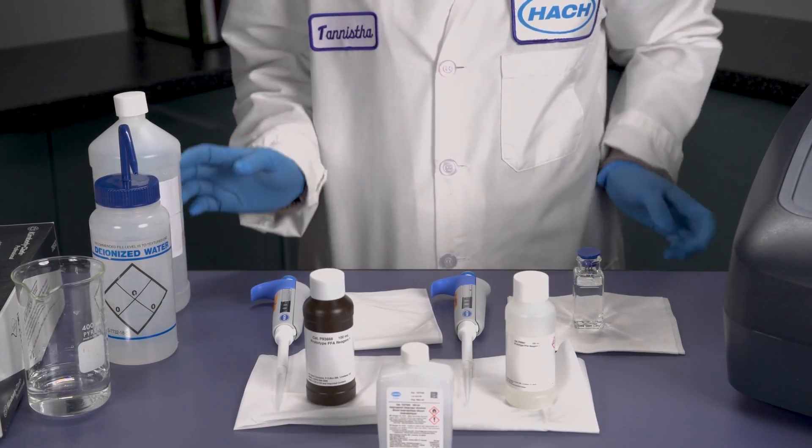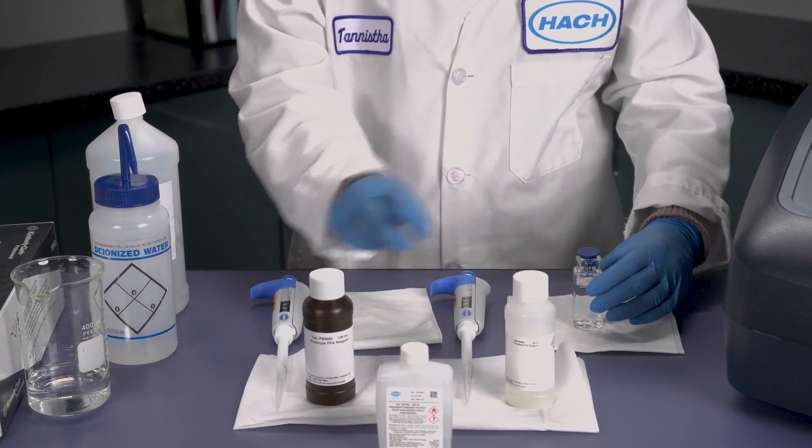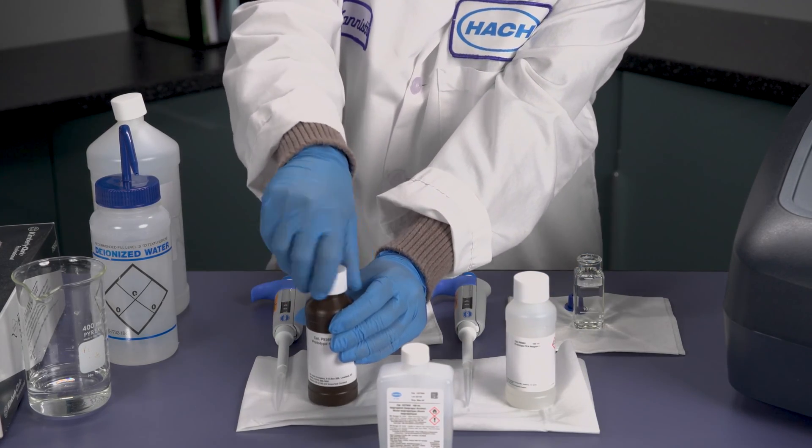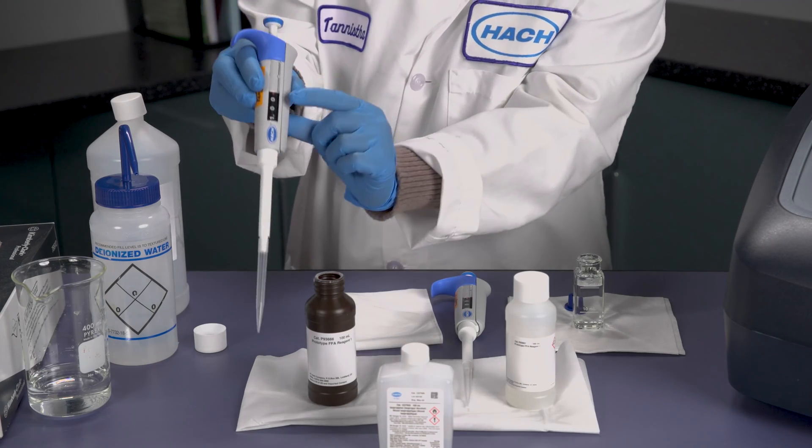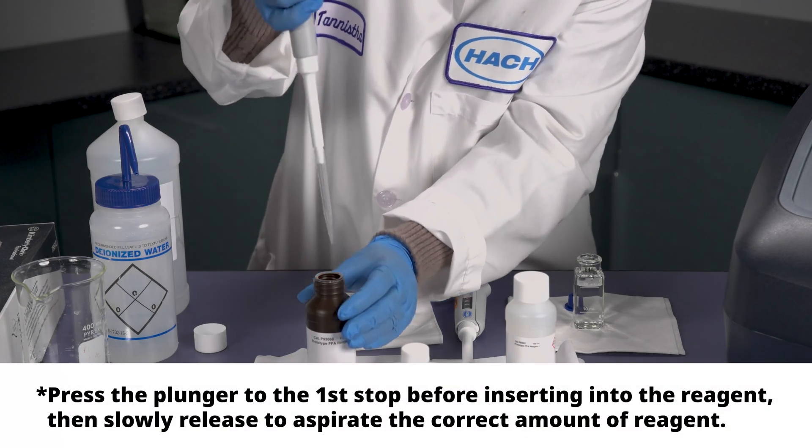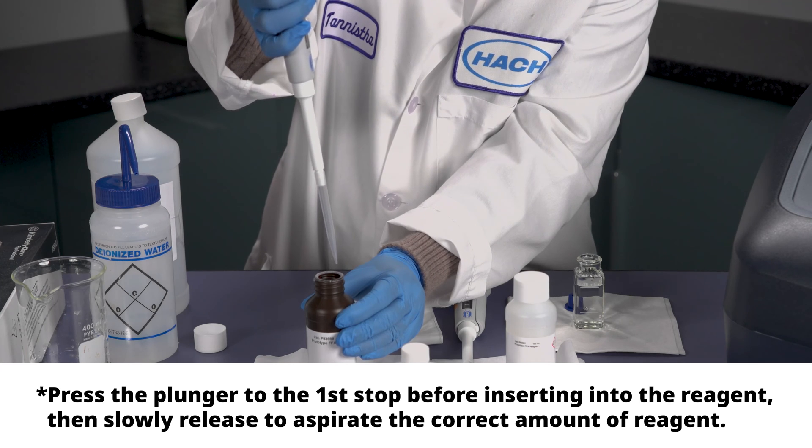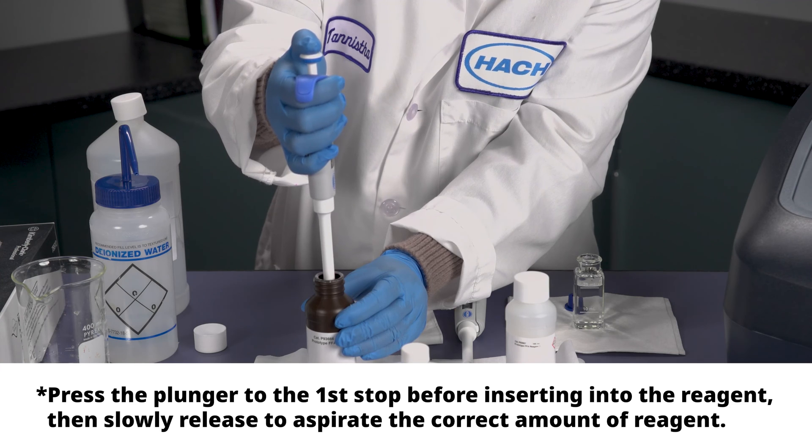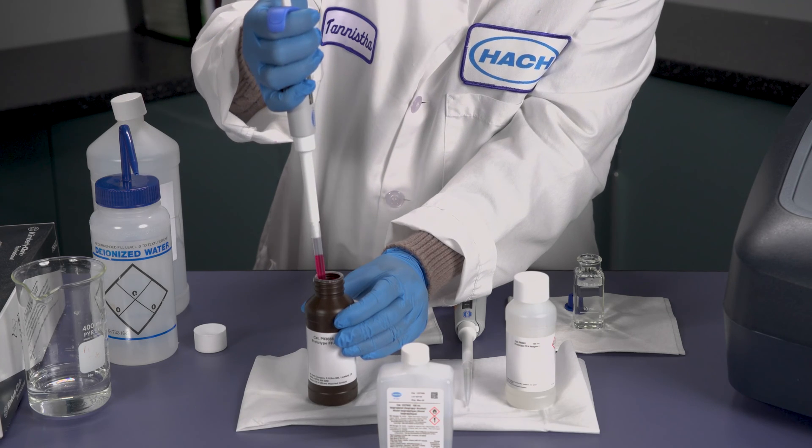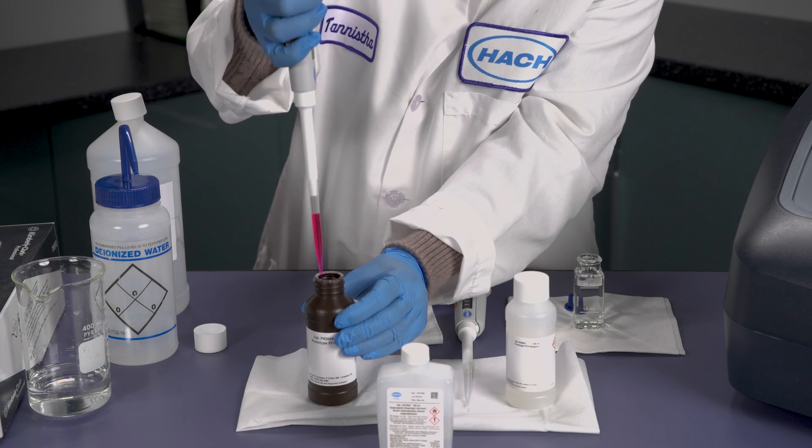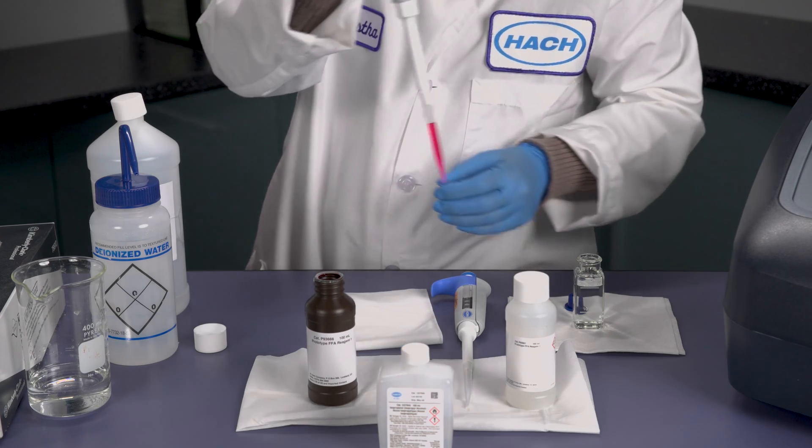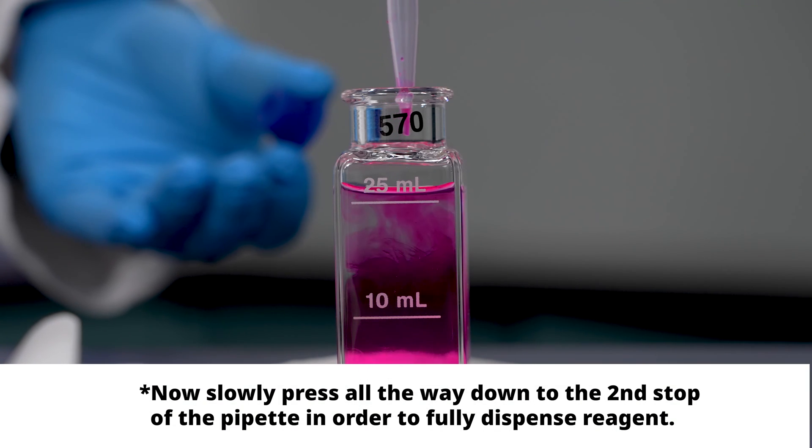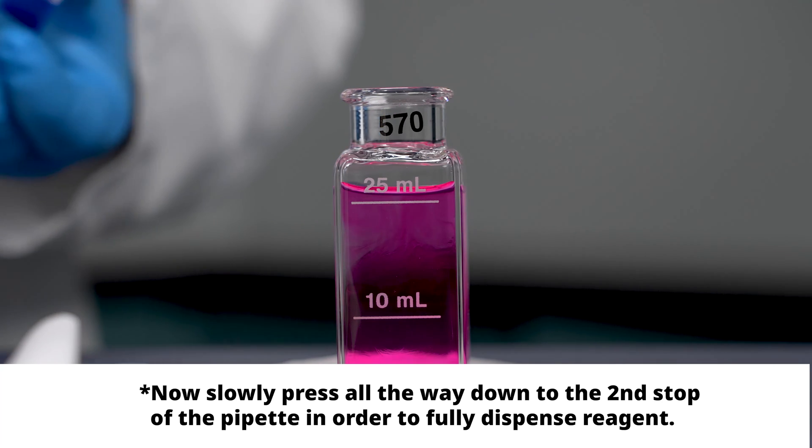First, we're going to pipette film forming amine 1 into the sample cell. Again, it is very critical to properly pipette. Have your pipette at 1 ml. Accurately put it in and slowly depress the plunger, bringing up the reagent very slowly, keeping it vertical, and then accurately transferring to the sample cell. Take your time and make sure all of the reagent is added.